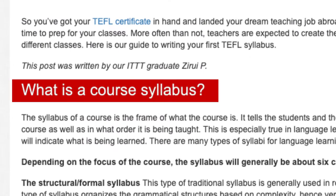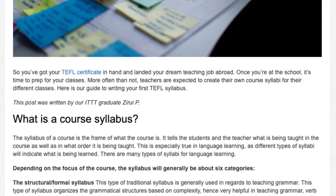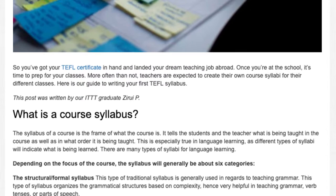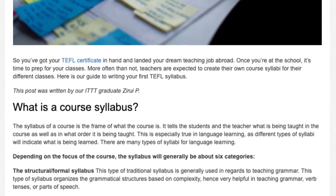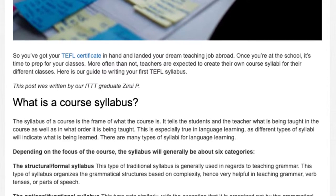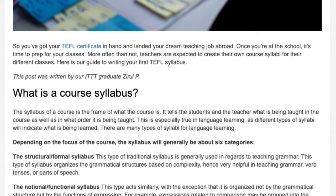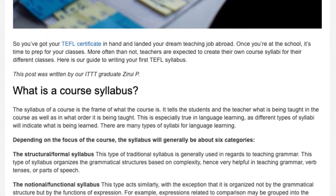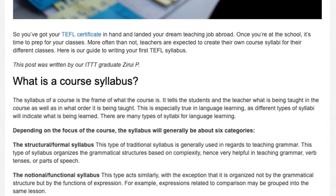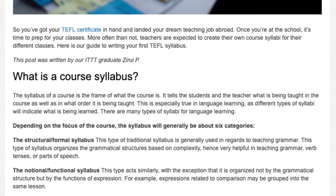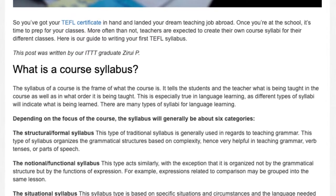What is a course syllabus? The syllabus of a course is the frame of what the course is. It tells the students and the teacher what is being taught in the course, as well as in what order it is being taught. This is especially true in language learning, as different types of syllabi will indicate what is being learned. There are many types of syllabi for language learning. Depending on the focus of the course, the syllabus will generally fall into about six categories.